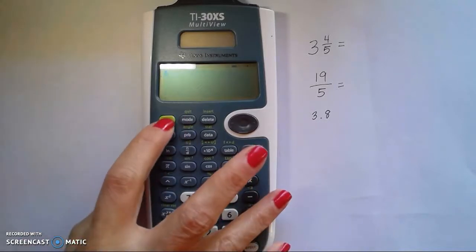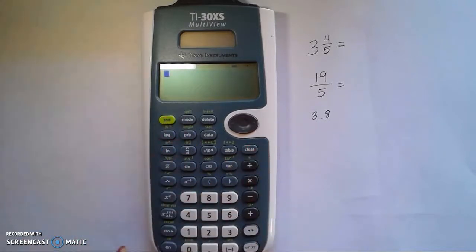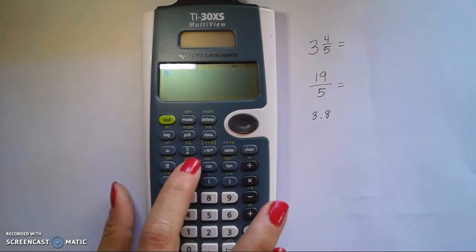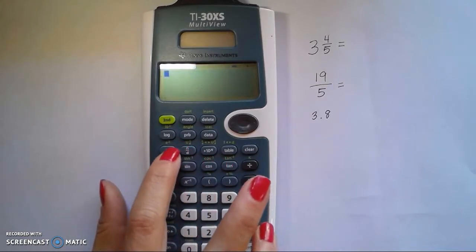First thing you're going to want to do is click the second key. It's this green key in the top left hand corner. This allows us to have access to all the secondary functions for each of these menu keys.